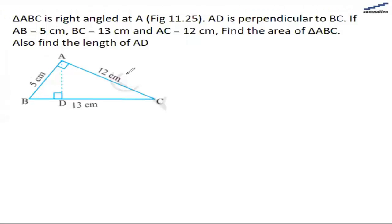In this question, we are given a triangle ABC that is right angled at A. This angle A is 90 degrees, and AD is perpendicular to BC. AB is given, BC is given, and AC is also given.